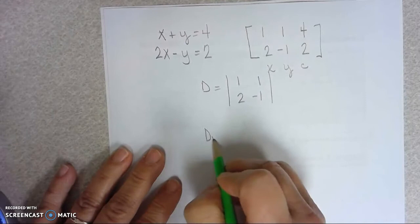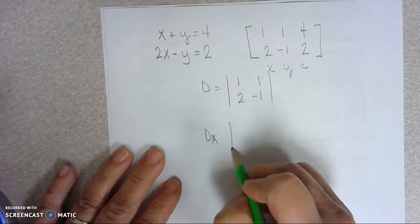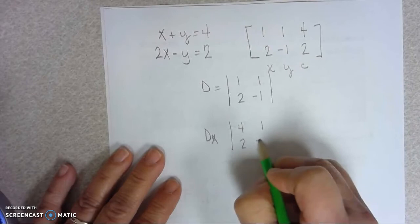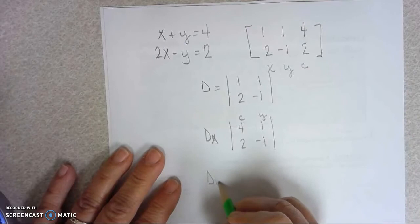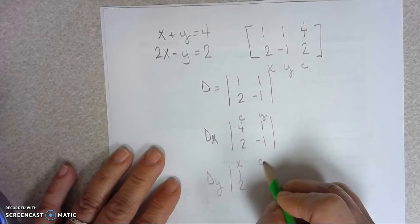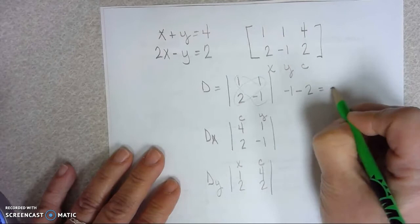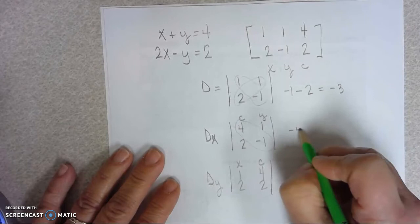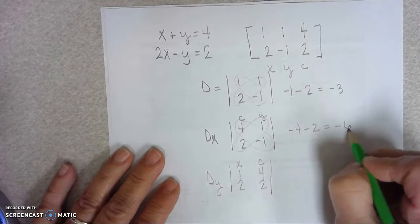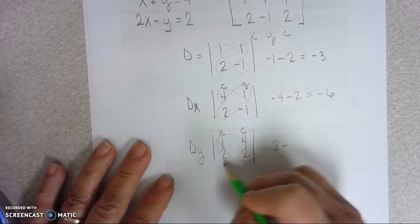So to find D, we want the determinant of my coefficients. To find DX, we want the determinant. Instead of the X's, we need to put our constants in place, and still use your Y's, so constants and Y's. And to find DY, we go back to our X's. And instead of using our Y's, we use our constants. 1 times negative 1 minus 2 times 1 would be negative 3. 4 times negative 1 minus 2 times 1 would be negative 6.